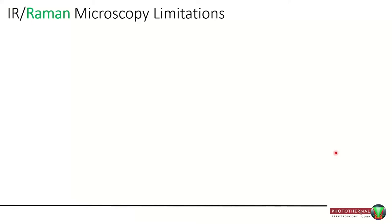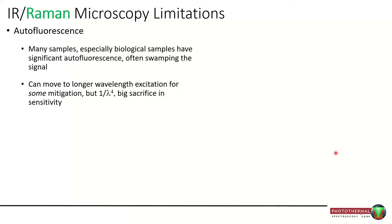Moving to Raman microscopy, that has a whole host of other limitations. Anyone who's used a Raman microscope will tell you the number one issue is autofluorescence — many samples, especially biologicals, have significant autofluorescence that often swamps the signal. One approach is to move to longer excitation wavelengths, such as 785 nm, but that comes with a massive sacrifice in sensitivity because of the one-over-lambda-to-the-fourth relationship — as the excitation wavelength gets longer, sensitivity drops off very quickly.